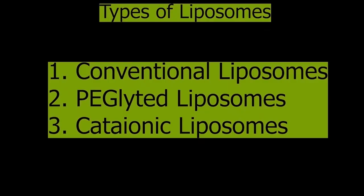Types of liposomes. There are usually three different types of liposomes: conventional liposomes, pegylated liposomes, and cationic liposomes. Let's understand these one by one.